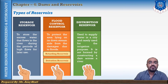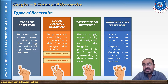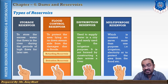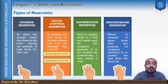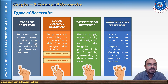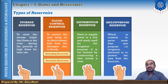The fourth type is the multi-purpose reservoir. This kind of reservoir is constructed to solve more than one purpose — for irrigation, but also for electricity generation or domestic purpose. When a particular reservoir is constructed for more than one purpose, such reservoirs are known as multi-purpose reservoirs.